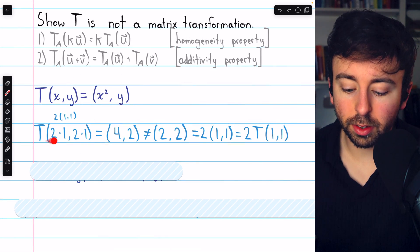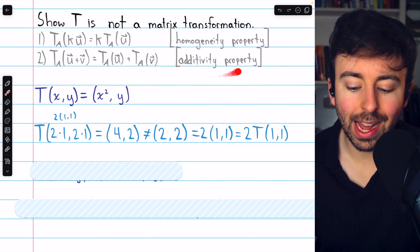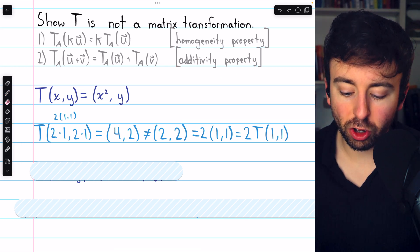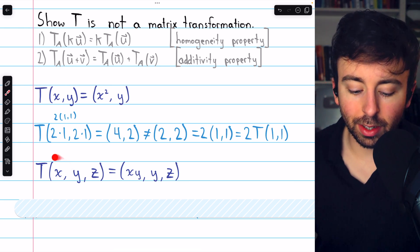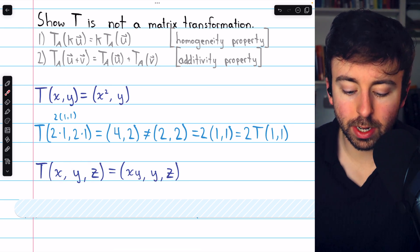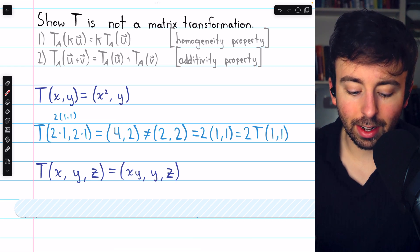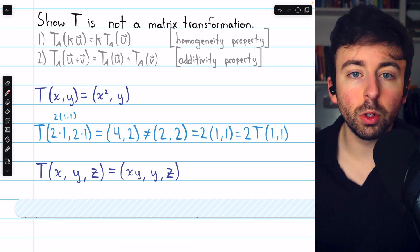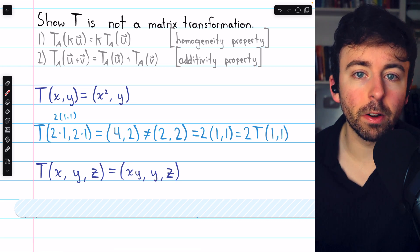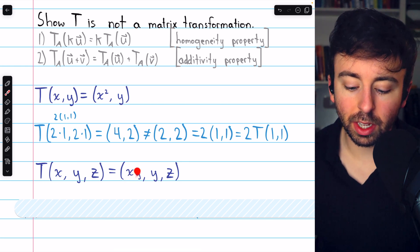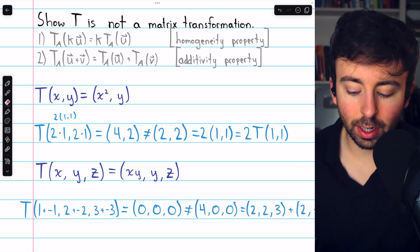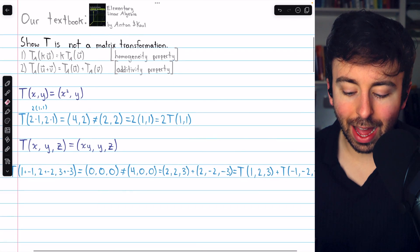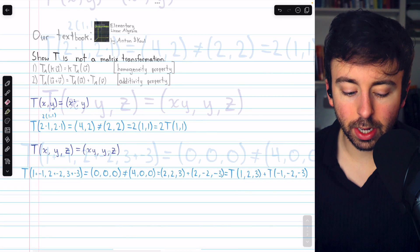You could have just as easily shown that this transformation does not satisfy the additivity property, but let's go ahead and show that this different transformation does not satisfy that property. So this is a transformation from R³ to R³. Its behavior is that it takes the x component and multiplies it by the y component, and it doesn't change the other two components. Again, at a glance, this does not appear to be a matrix or linear transformation because one of the components is a product of the variables. And in this case, we'll show the transformation is not a matrix transformation by showing that it violates the additivity property.